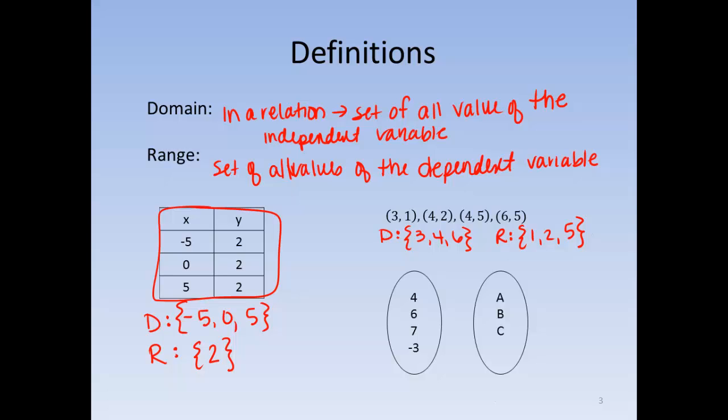And the last representation I have here, actually let me draw something here. This would be another representation of a relation, that 4 goes with A, 6 goes with B, 7 goes with B, and negative 3 goes with B. So here would be our independent, and here is our dependent. So this would be my domain, and this would be my range.